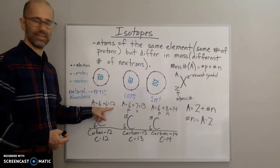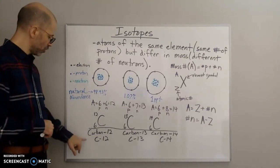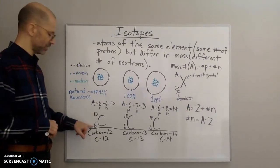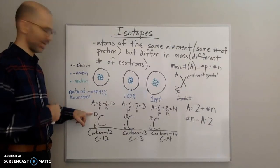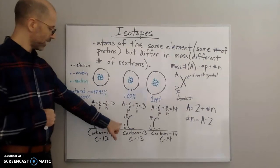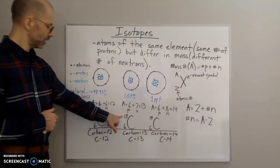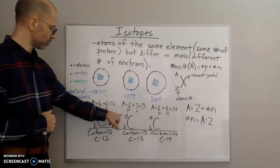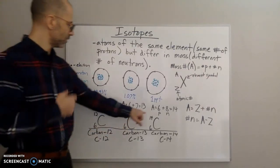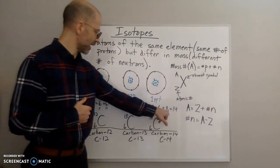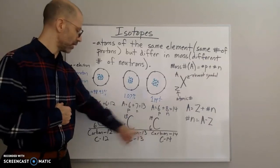The mass number identifies the isotope; the atomic number identifies the element. For carbon-13: C with 13 on top (six protons plus seven neutrons) and 6 on the bottom. For carbon-14: C with 14 on top (six protons plus eight neutrons) and 6 on the bottom as the atomic number.